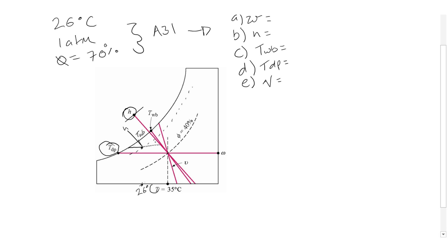You're going to come across here. You're going to come across from that to find W, specific humidity. And finally, what you're going to find is the specific volume.